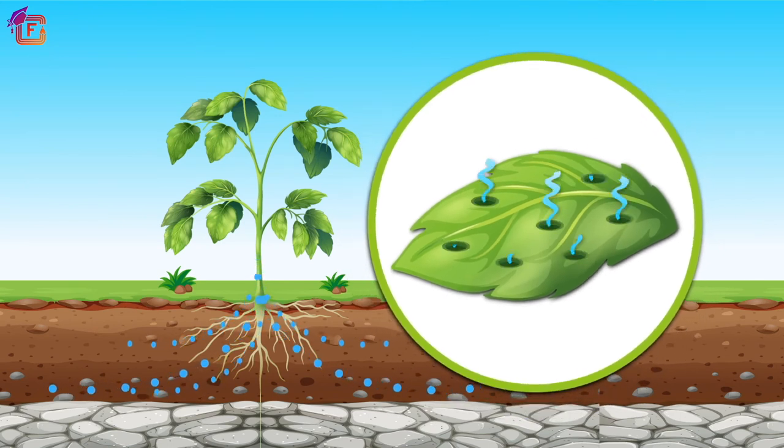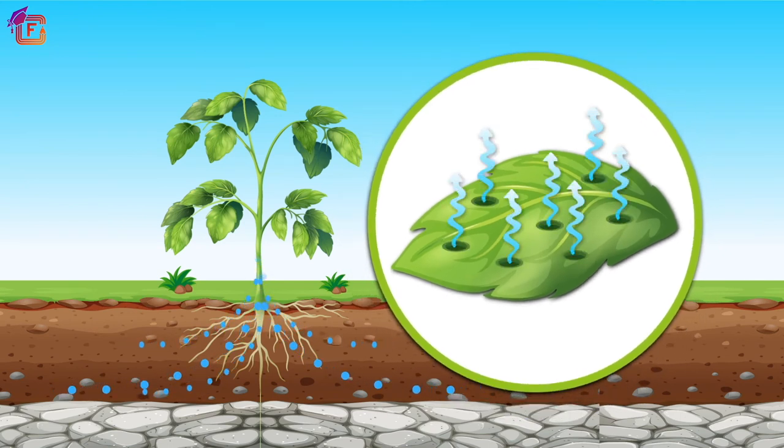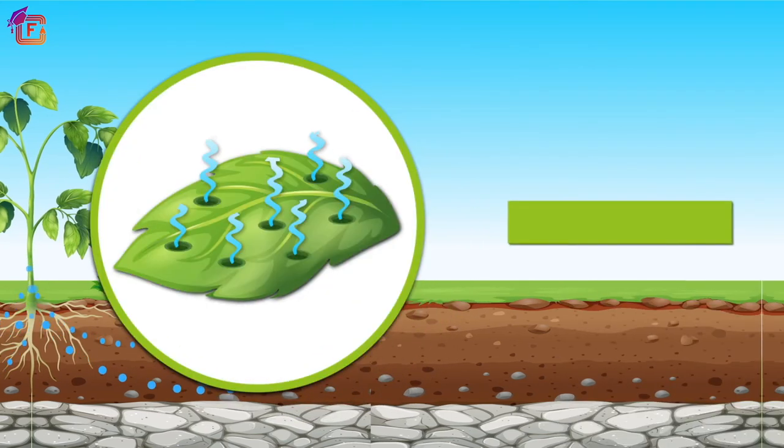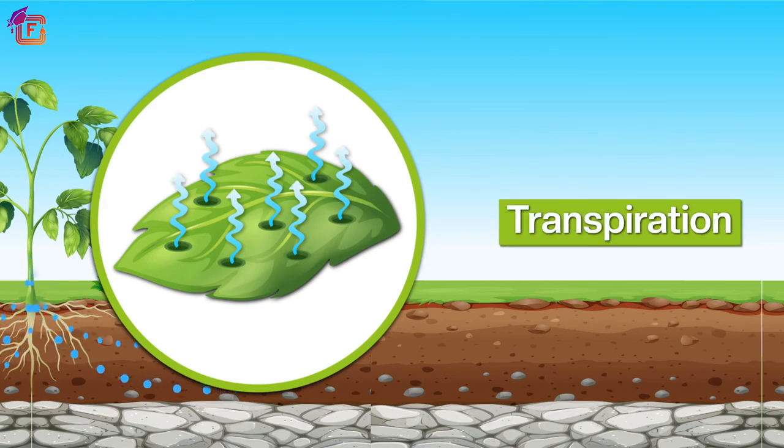If water absorption from the soil is slower, the rate of transpiration also slows down. Lots of energy from plants is released during transpiration. Sometimes plants absorb excess water which is unnecessary — if excess water accumulates in plant cells, the cells will eventually burst.